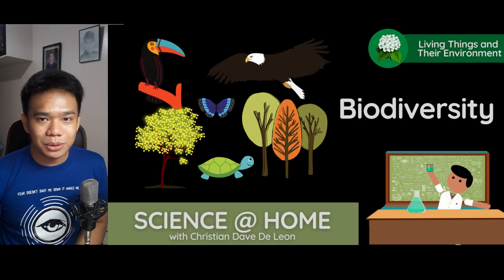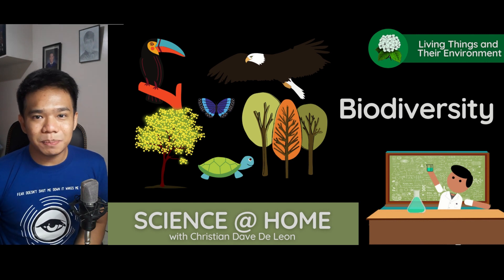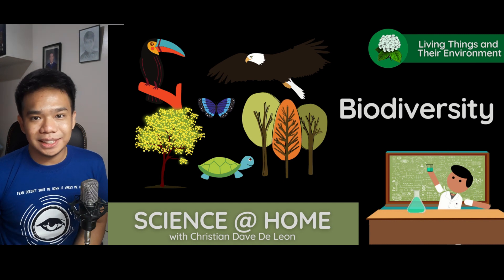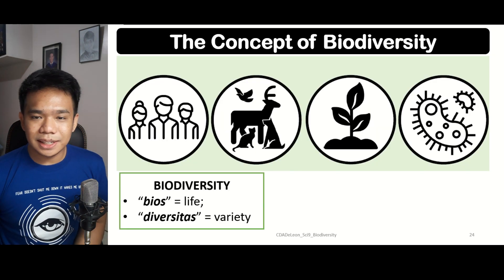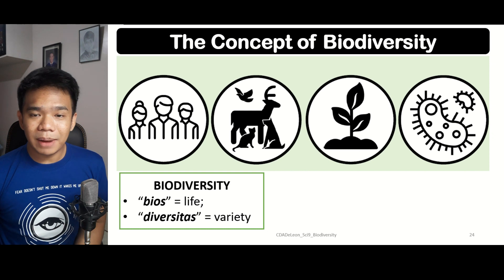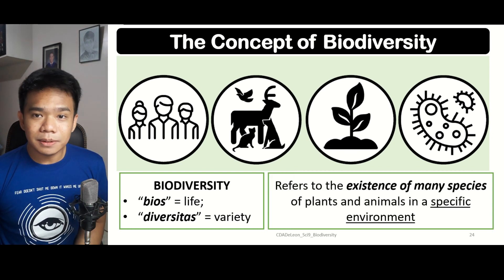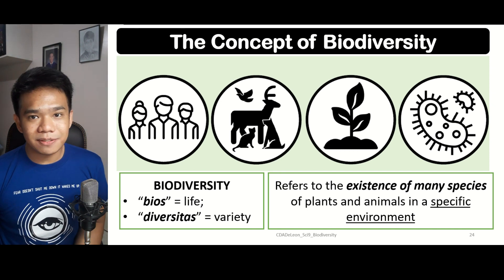Hi everyone! Welcome back to Science at Home. For today, we're going to be discussing the concept of biodiversity, which is connected to the central theme of biology: unity and diversity. The term biodiversity came from the words bios, which means life, and diversitas, which means variety. Biodiversity refers to the existence of different species of plants and animals within a specific environment.